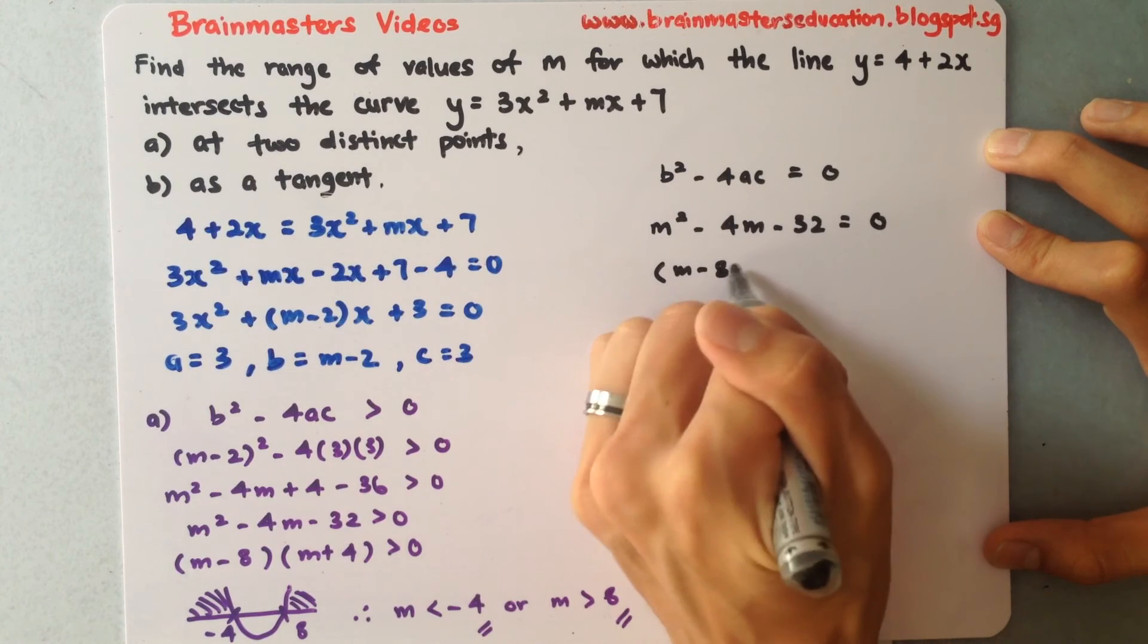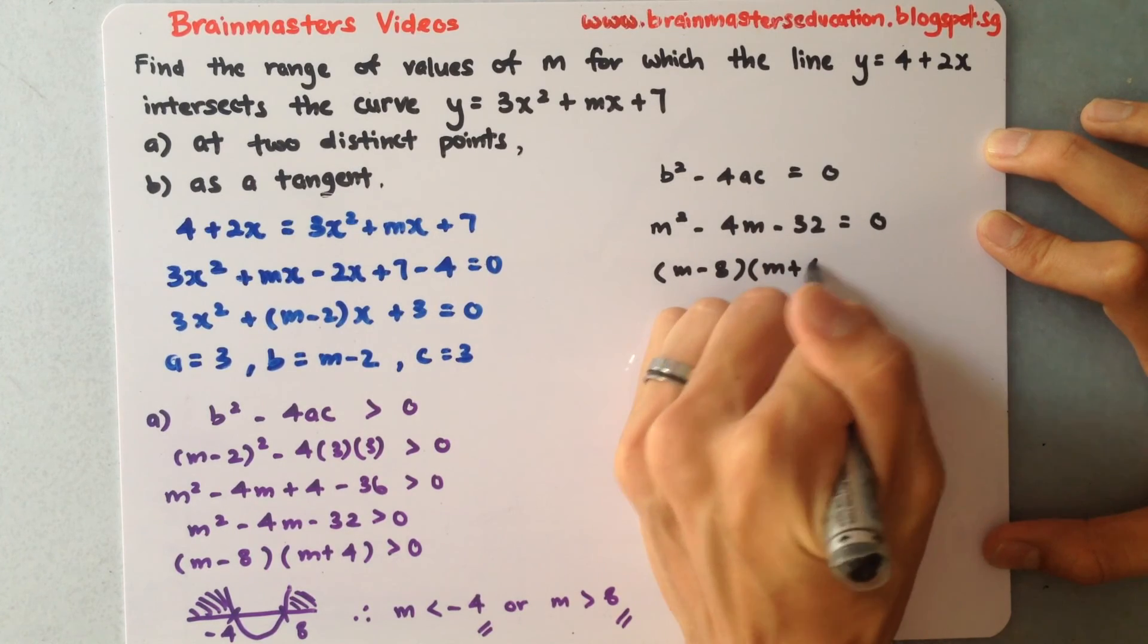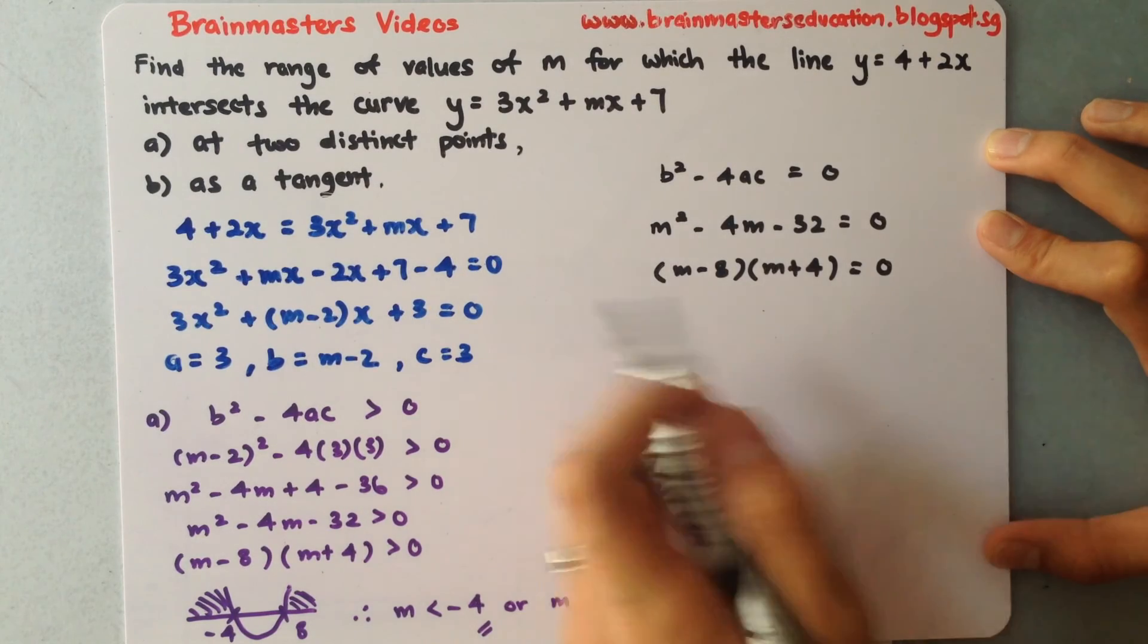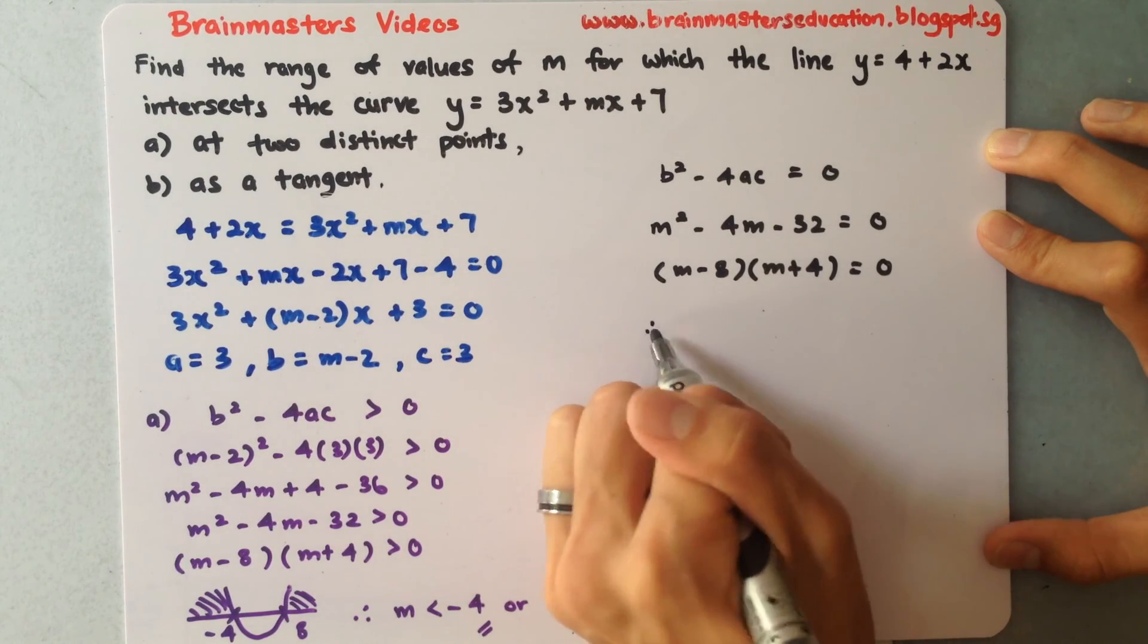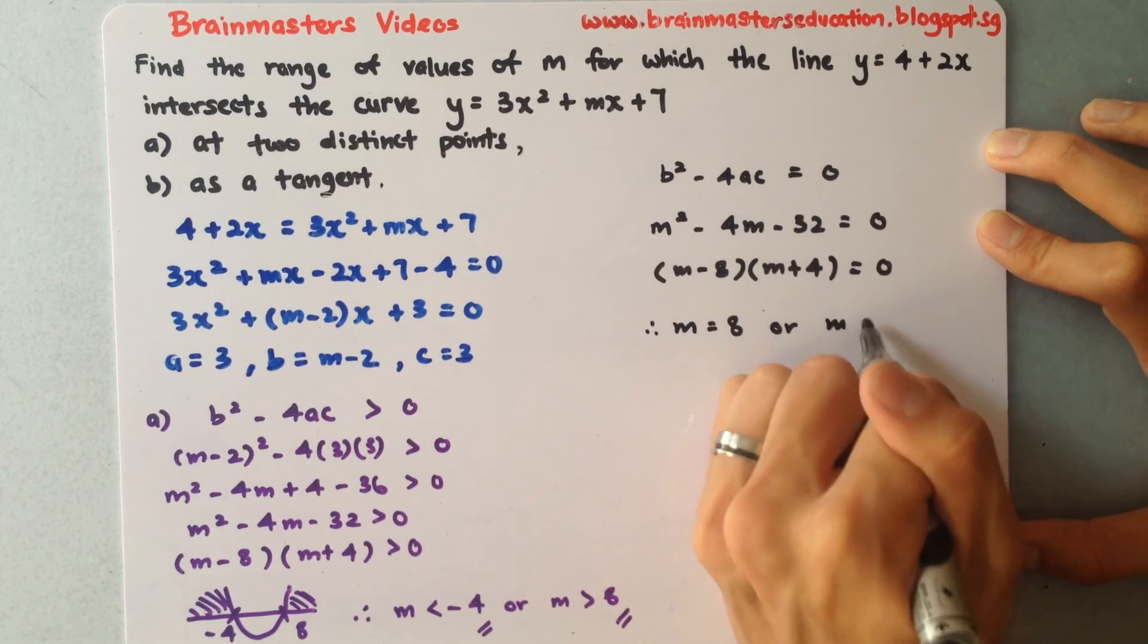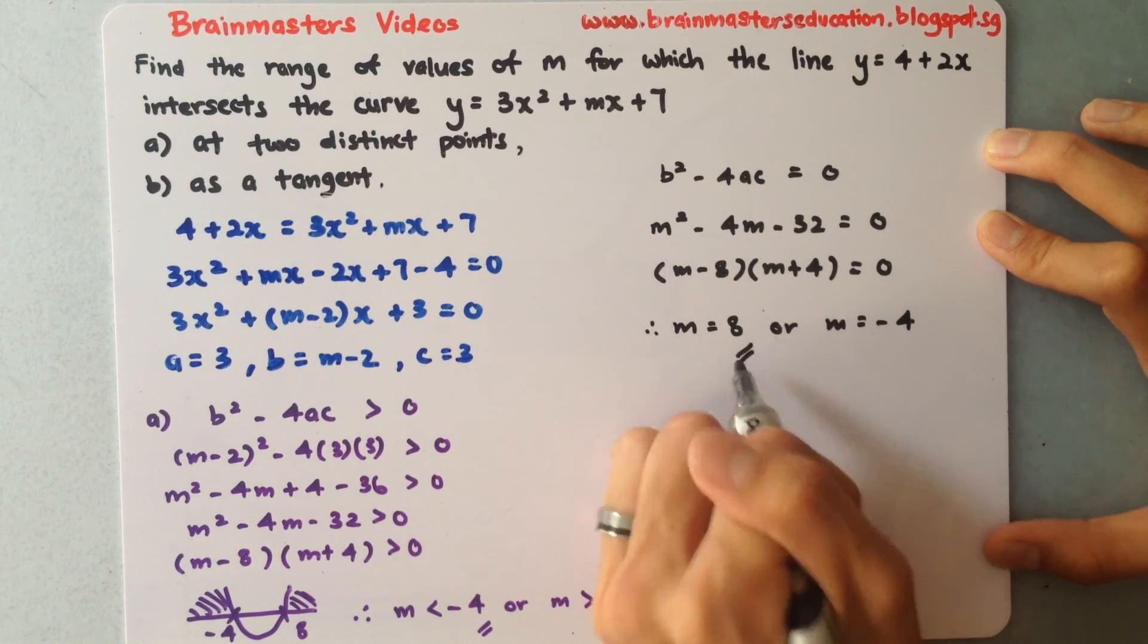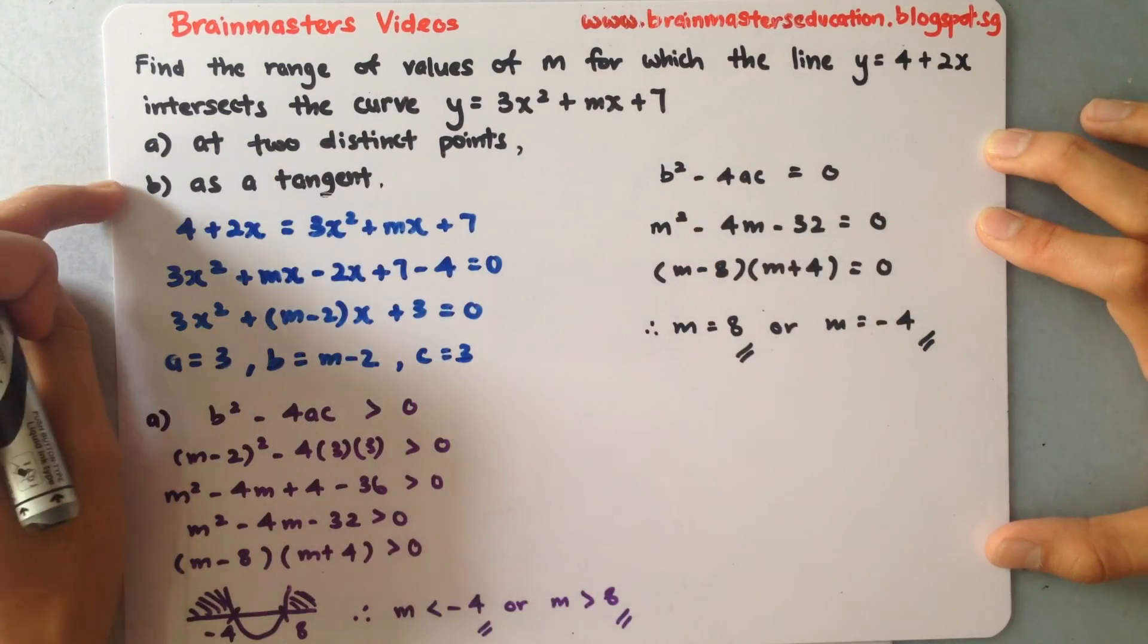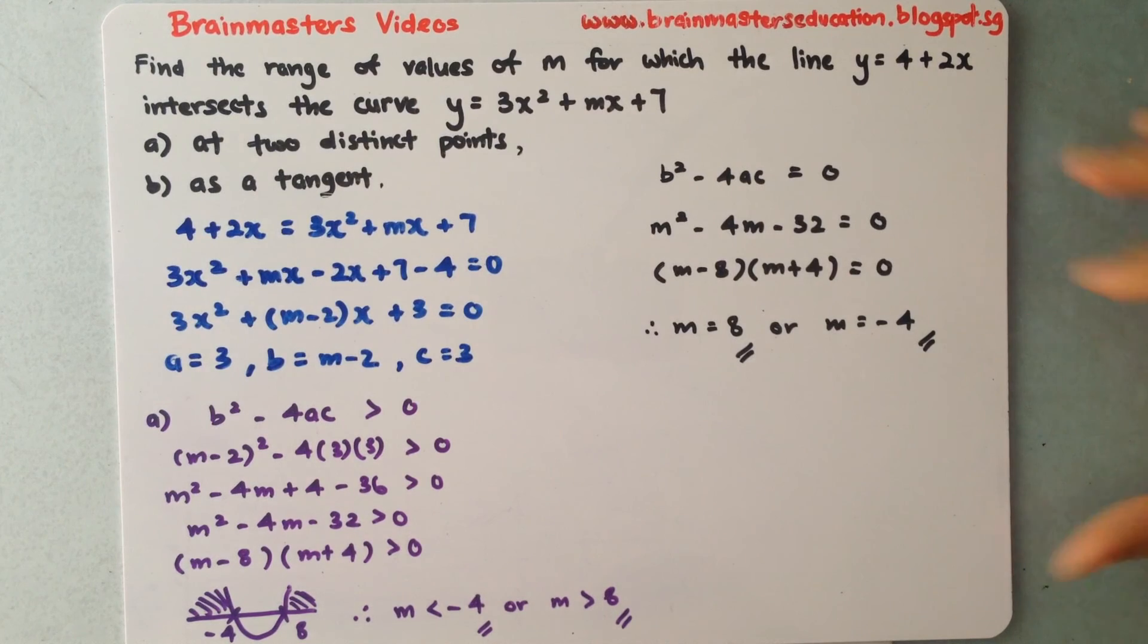(m - 8)(m + 4) = 0. Therefore m = 8 or m = -4. These values will give one intersection point each, making the line tangent to the curve.